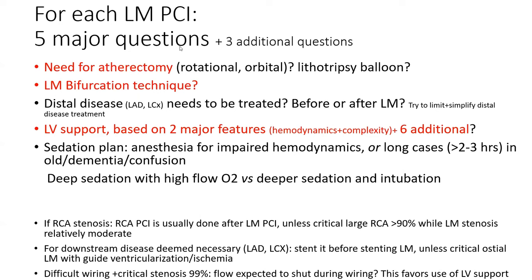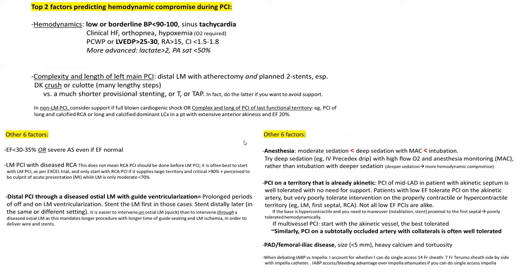The five major questions are: need for atherectomy, left main bifurcation technique, LV support, and sedation plan. LV support is decided on two major features and six additional features. The two major features are hemodynamics — including blood pressure, LVDP, and clinical heart failure and hypoxemia — and the complexity of your left main intervention, which you can modify depending on which distal bifurcation stenting technique you use.